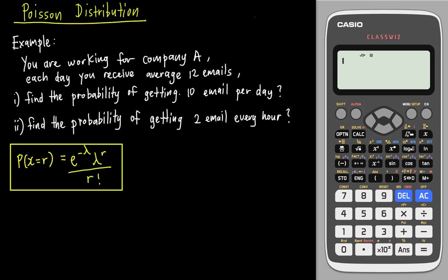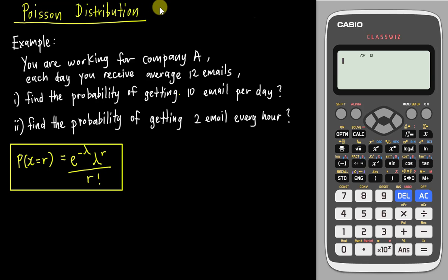Hi, this is another video sponsored by Casio Malaysia. In this video I will teach you how to use the new Casio 570EX calculator to solve Poisson distribution questions. In this video I will only focus on the Poisson PD, which is the Poisson probability distribution. In the next video I will discuss the Poisson CD, which is cumulative distribution.